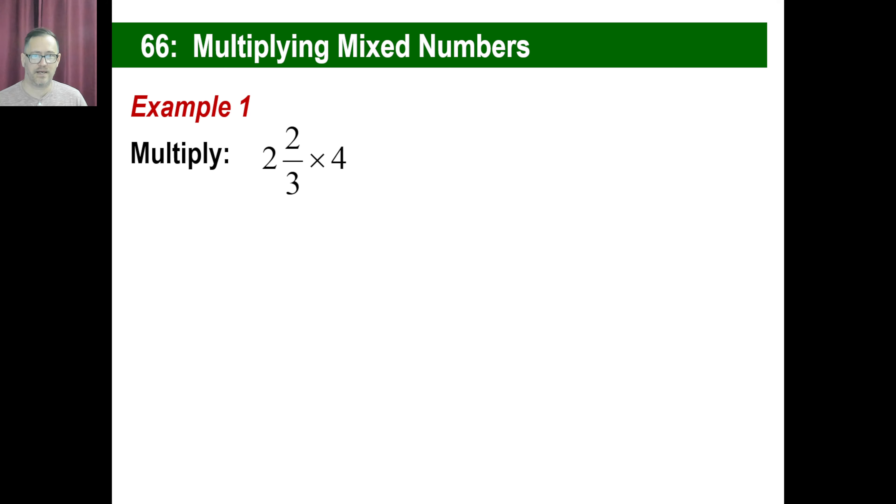Let's do one. Multiply two and two-thirds times four. Let's make this look fraction-y first. So, two and two-thirds, let's make that into an improper fraction. Three times two is six plus two is eight-thirds times four over one. Eight times four, three times one, 32 divided by three is ten. And then there's two left over, so ten and two-thirds.